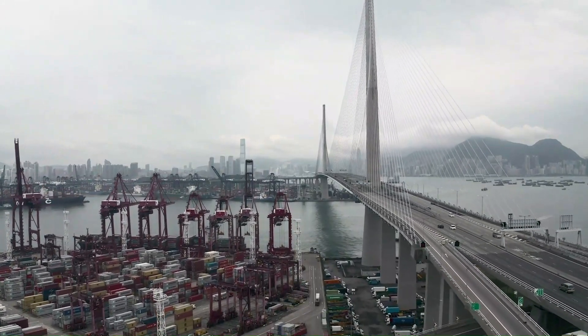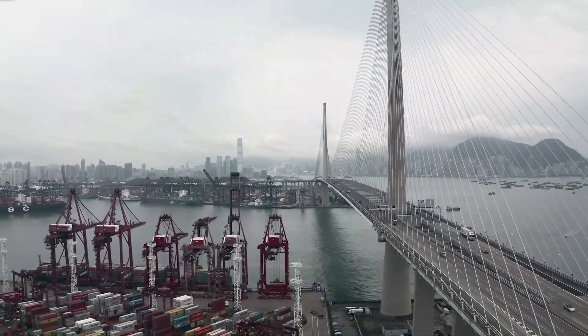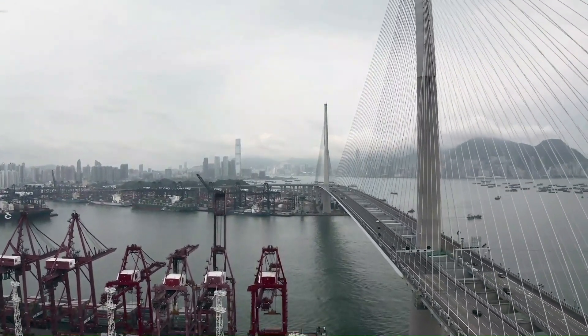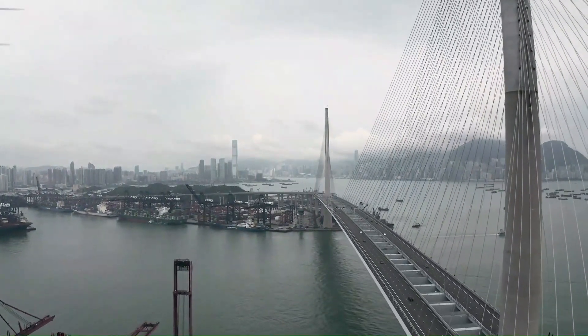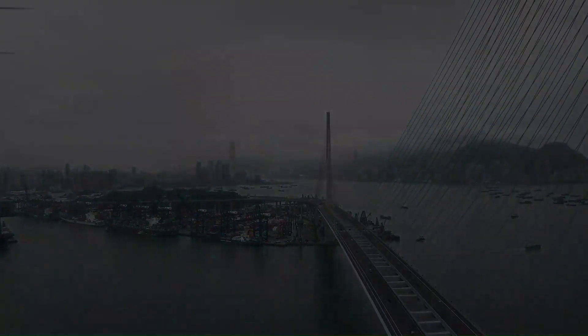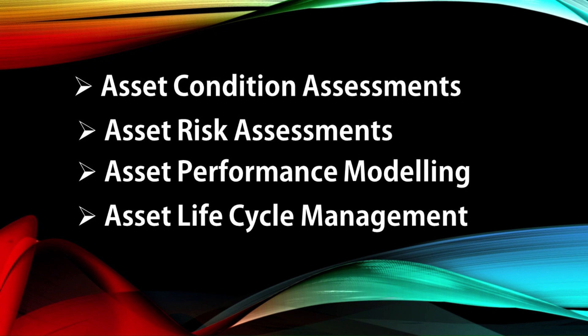Now that we understand the main goals of infrastructure asset management, the next question is what systems are used to achieve these goals. For the sake of this channel, we will simply break it down into four main tools and techniques with a short breakdown for each: asset condition assessments, asset risk assessments, asset performance modeling, and finally asset life cycle management.